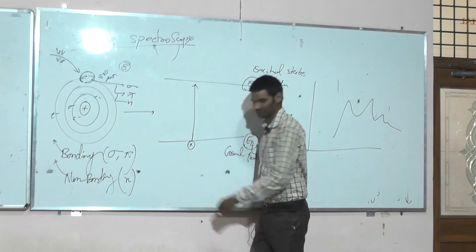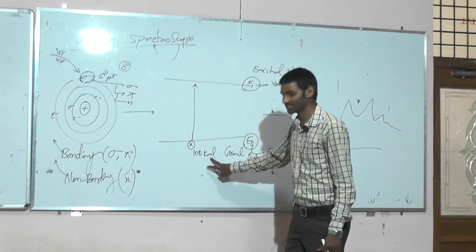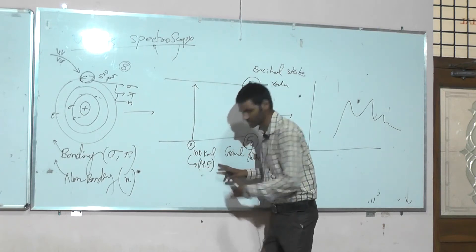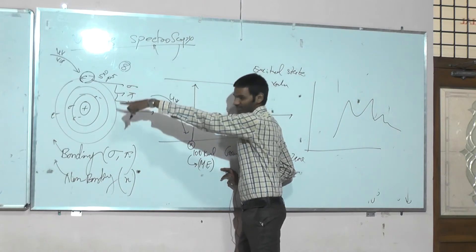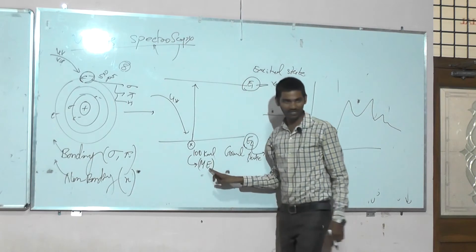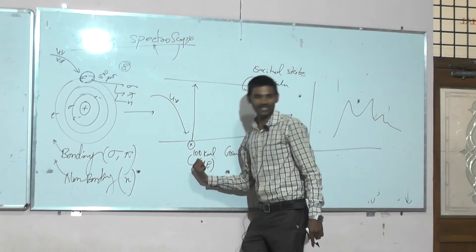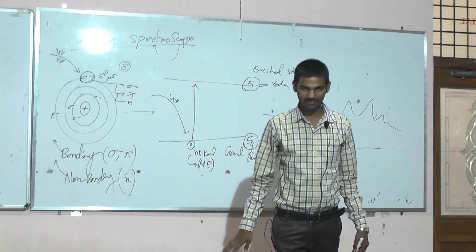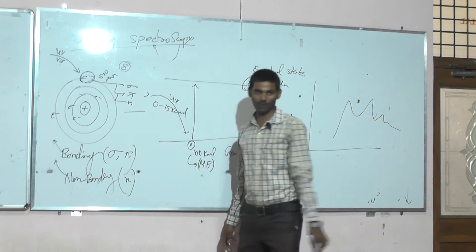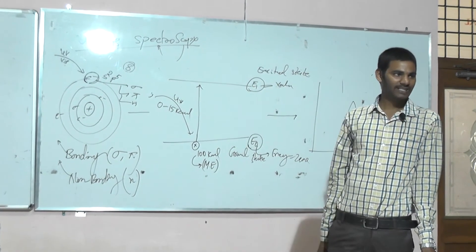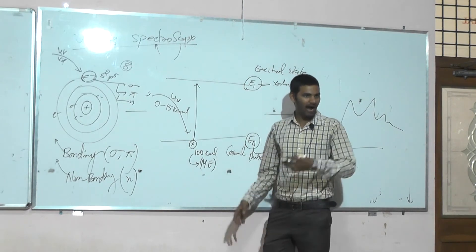Consider molecule X — in the introduction we have seen that X molecule has a molecular energy of 100 kilocalories. We are passing external UV radiation, and that radiation can be captured by the valence electron. If we are not passing the radiation, there are no changes at the molecular level and therefore no spectra. Now, assume the molecular energy is 100 kilocalories, and I am passing UV-visible radiation within the range of 0 to 15 kilocalories.